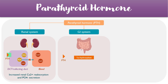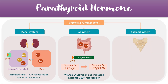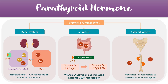The second system PTH acts upon is the gastrointestinal system. There is one enzyme in particular called 1-alpha hydroxylase — when PTH binds to this enzyme it activates it, catalyzing the reaction from an inactive form of vitamin D to the active form. The increase in active vitamin D helps retain more calcium in the gut, increasing intestinal calcium reabsorption. The final system is the skeletal system, where PTH increases osteoclast activity, leading to bone resorption and releasing more calcium into the bloodstream. Combined, these effects increase calcium and decrease phosphate.